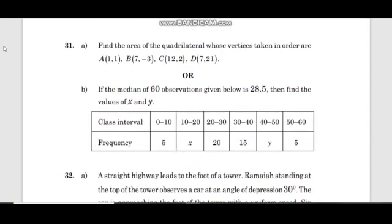Question 31: Find the area of the quadrilateral whose vertices taken in order are A(1, 1), B(7, minus 3), C(12, 2), D(7, 21). Divide the quadrilateral into two triangles, ABC and ACD, and find the area of each triangle.